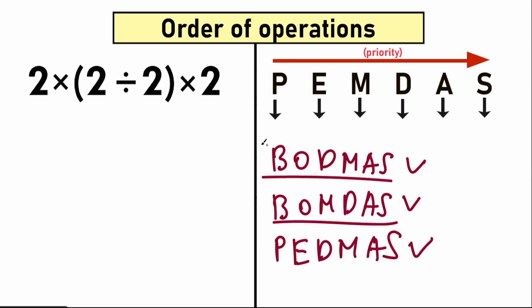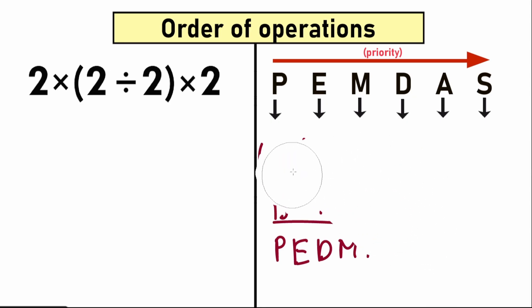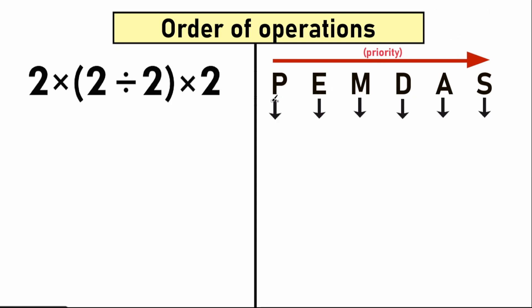The order of operations covers brackets, orders, division, multiplication, addition, and subtraction — it's absolutely the same for every variant. In 95% of cases people use PEMDAS. I'm going to explain PEMDAS, but whichever order you choose, we will have absolutely the same answer. It's like a quick checklist where each letter stands for something, read in strict order from left to right — higher priority on the left, lower priority on the right.